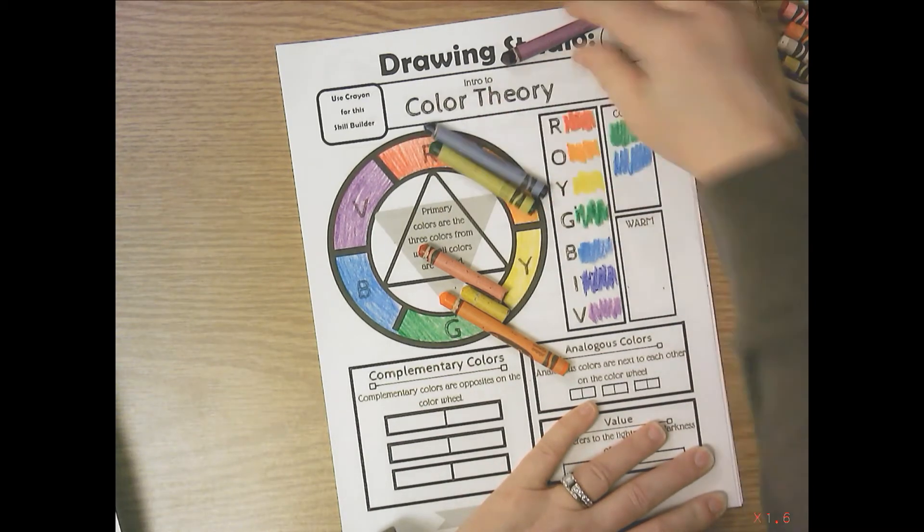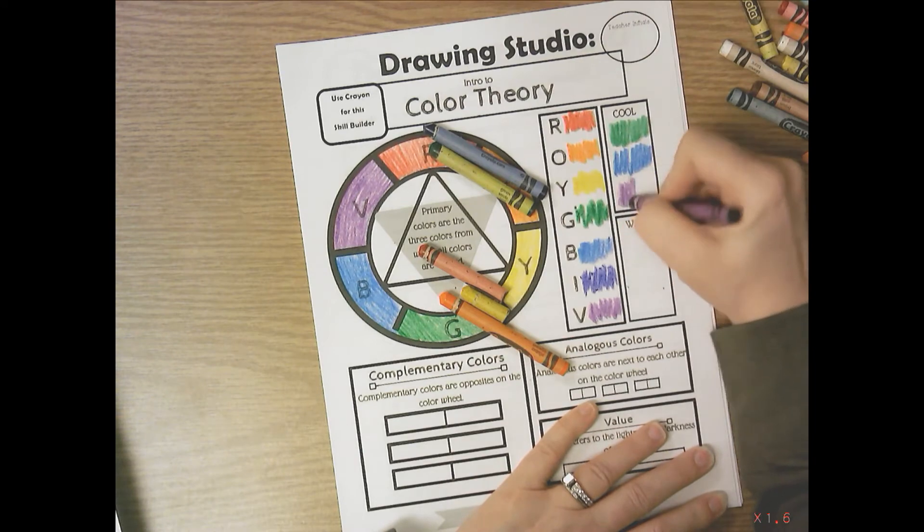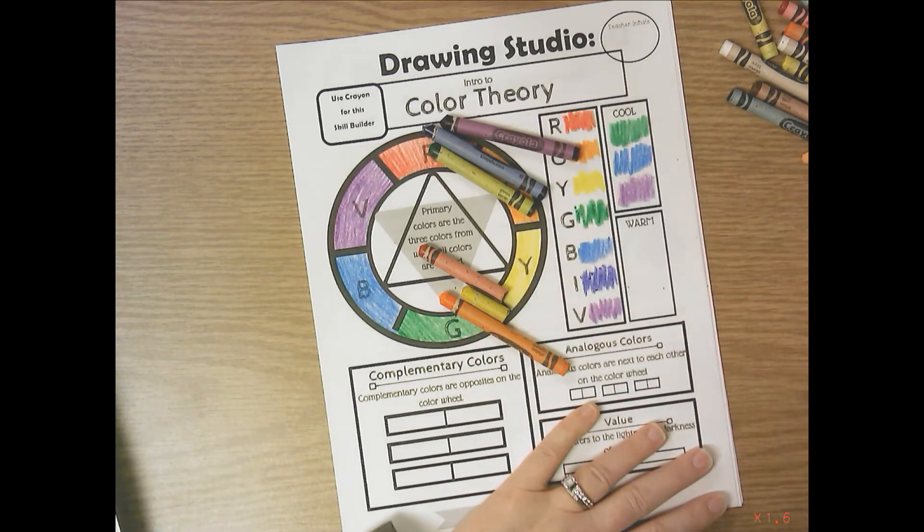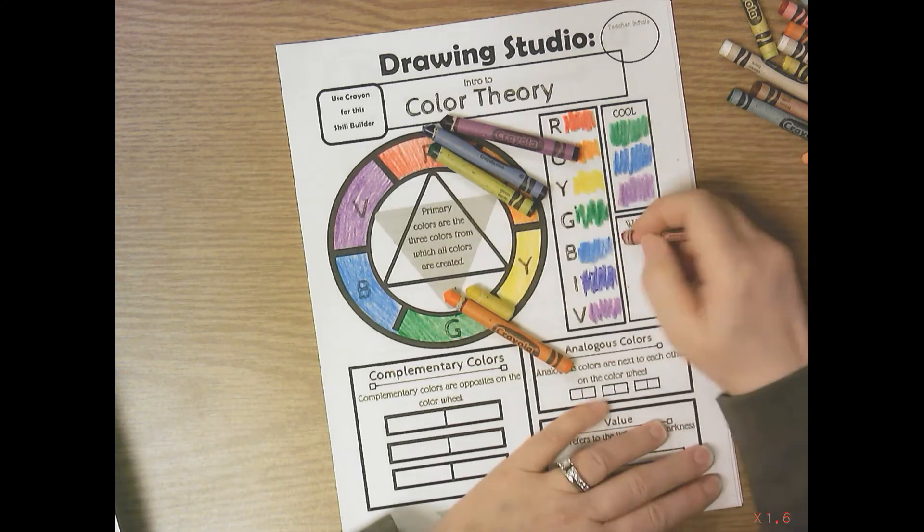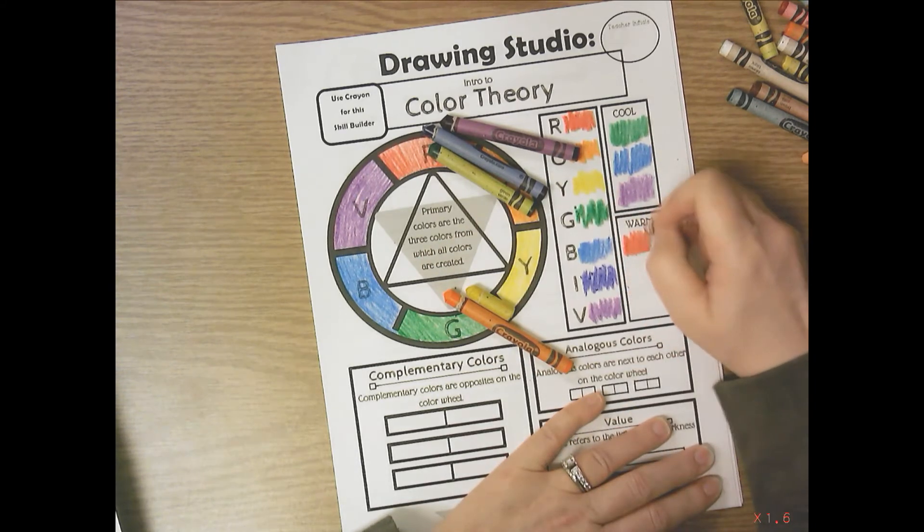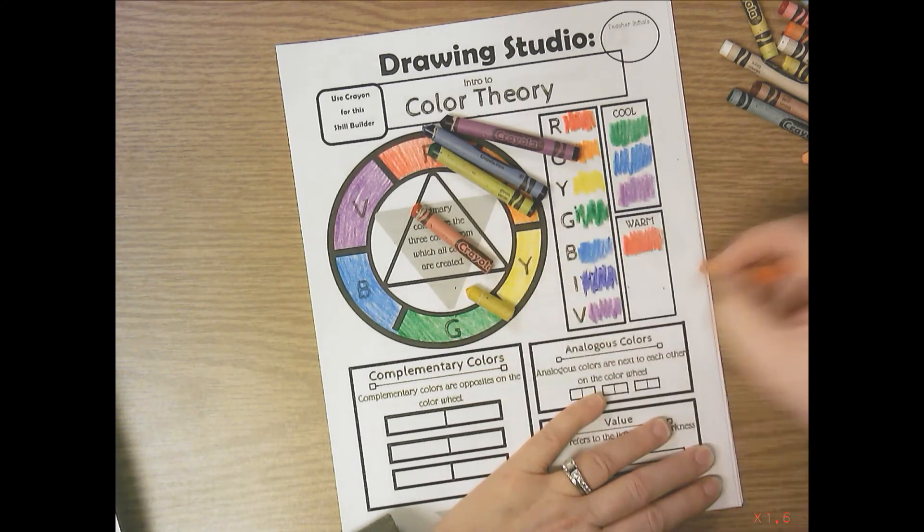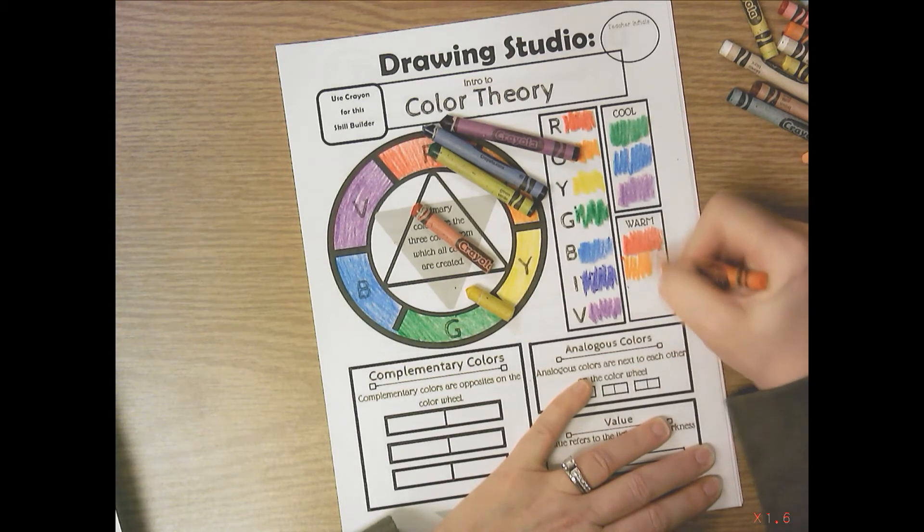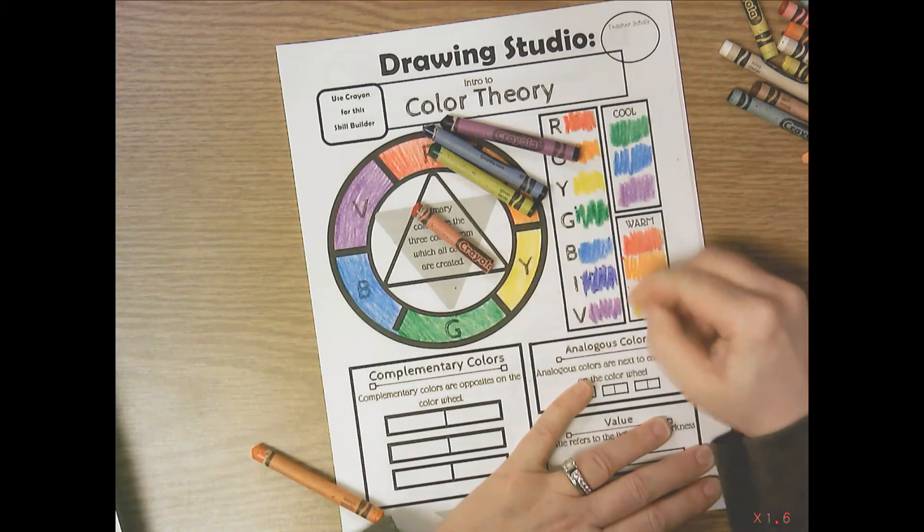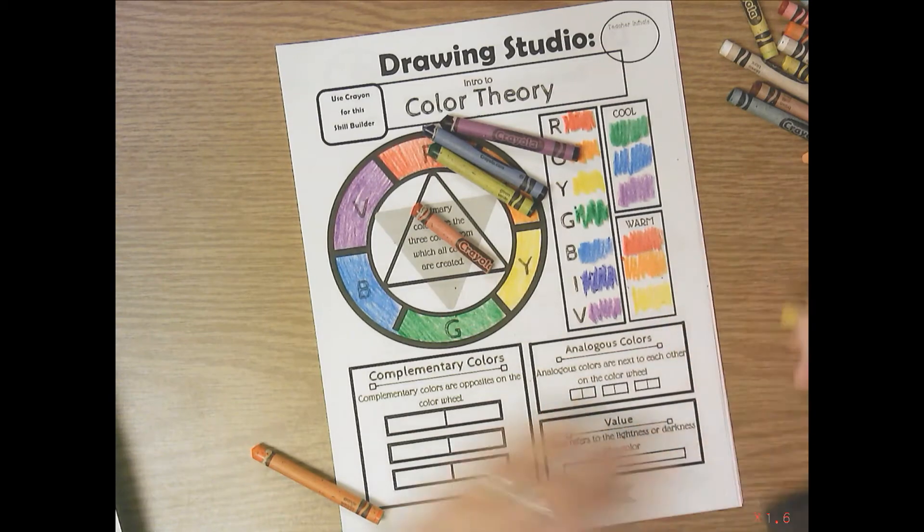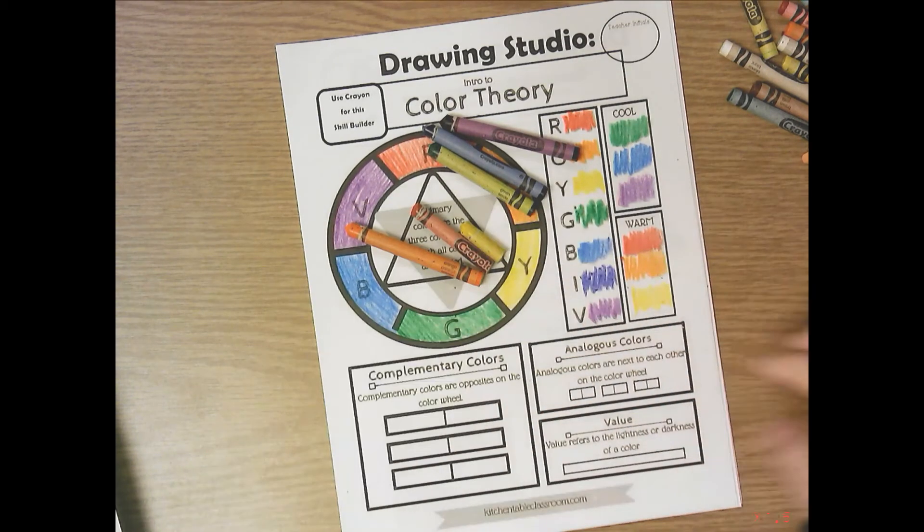And this sheet is a reference sheet. So as you start to create your work later on in the school year, if you're looking for an objective that maybe says identify warm and cool colors in your artwork, then if you don't remember what warm and cool are, you have this color theory sheet to refer back to in your sketchbook for when you want to demonstrate that objective.